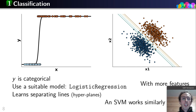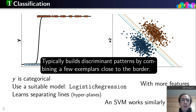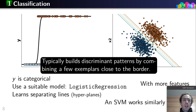Those models build discriminant patterns by combining a few exemplars of data close to the border, which means my decision might be driven by only a few exemplars. Both logistic regression and the SVM have a hyperparameter to tune this, but typically the default value works well.